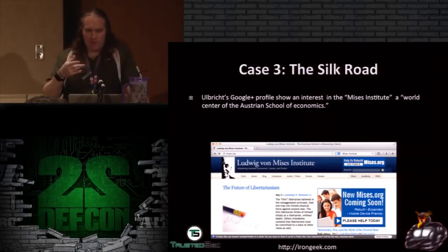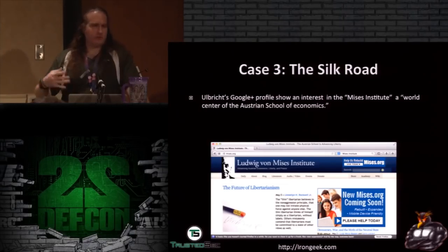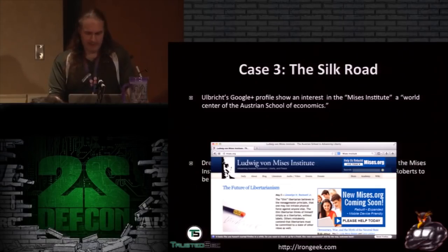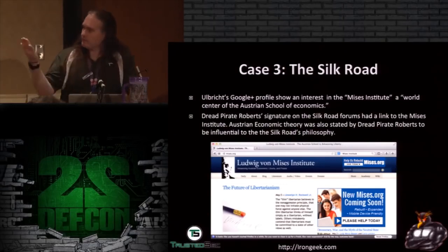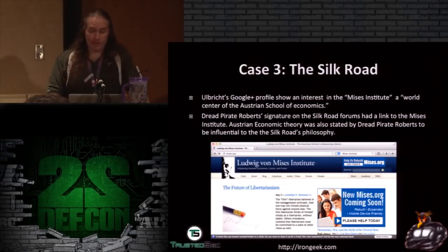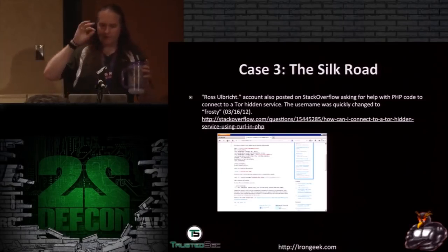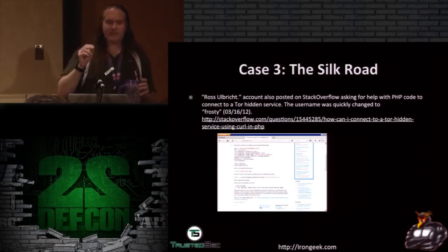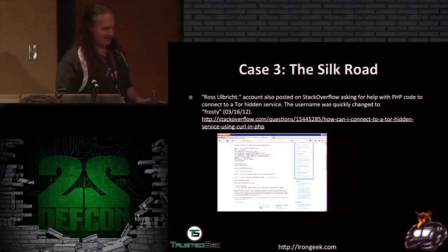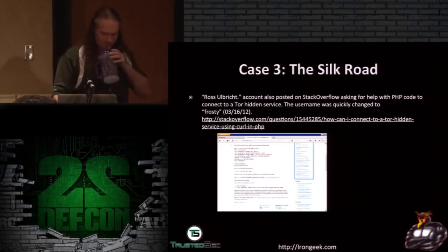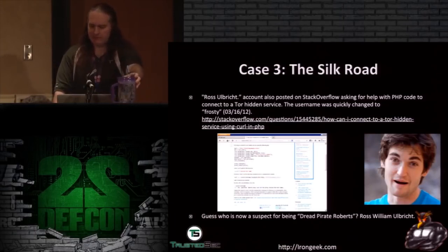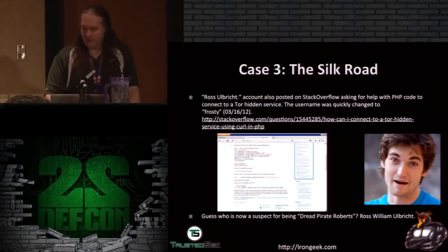Additionally, Dread Pirate Roberts posted extensively about his economic philosophy on Silk Road, and both Ulbricht and Roberts shared an interest in the Mises Institute and Austrian School of Economics. Ross Ulbricht also posted on Stack Overflow asking for help with PHP code for connecting to a Tor hidden service — and while he quickly changed his username to 'Frosty,' he had initially registered under his real name, Ross Ulbricht. Someone was also connecting to the Silk Road server from an internet cafe on Laguna Street in San Francisco, from which Ulbricht had previously logged into his Gmail account — death by a thousand paper cuts.